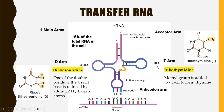The fourth arm of transfer RNA is called the anticodon arm, because it is complementary to the codons present on messenger RNA. The messenger RNA carries different codes, and the transfer RNA recognizes these codes to determine which amino acid needs to get attached to the acceptor arm.